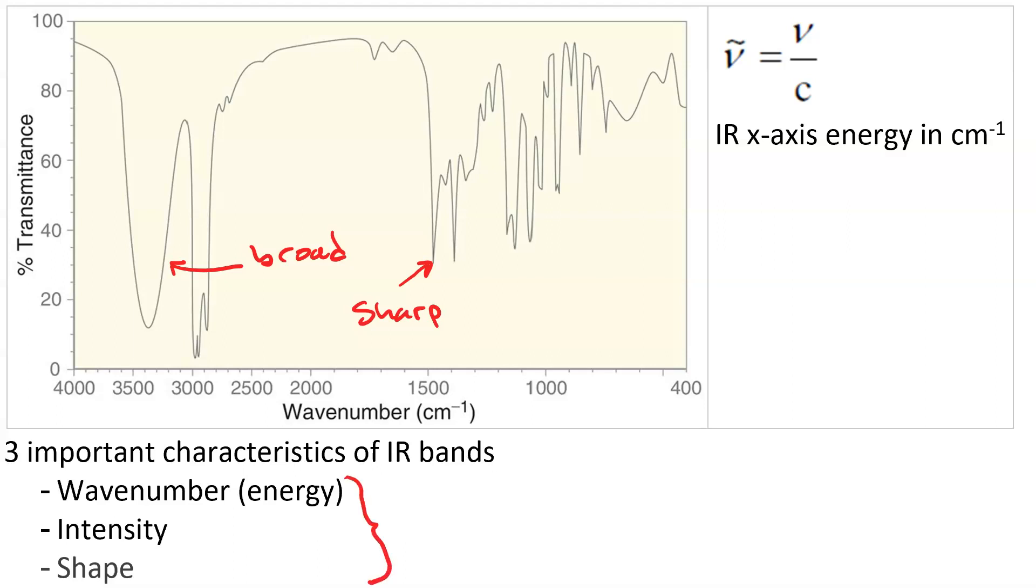These three characteristics of each signal, the wavenumber, intensity, and shape, tell us the functional group. And what you want to do is learn what the bands for each functional group look like, or the characteristic absorptions.